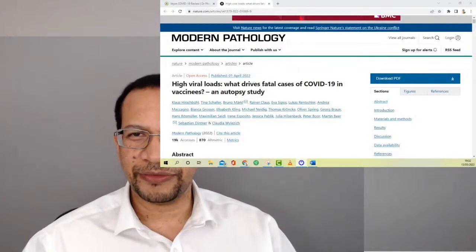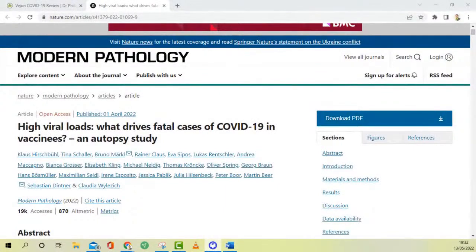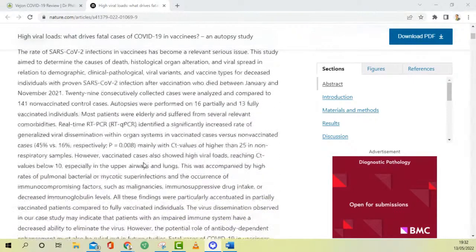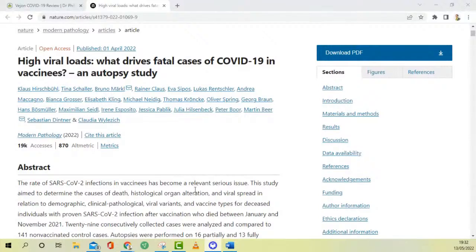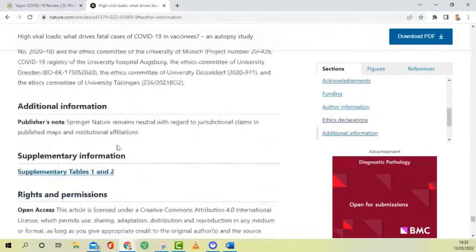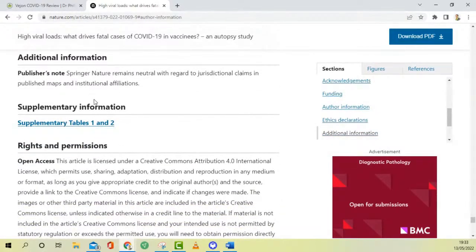Let's get straight into it. The link for this paper is in the description below. Here is Modern Pathology: high viral loads, what drives fatal cases of COVID-19 in vaccinees. This is the autopsy study. You have an abstract here which gives information about the overall paper. But the bit that I want you to focus on is to jump all the way down to the bottom to author affiliations and the supplementary information.